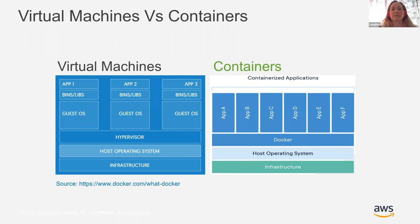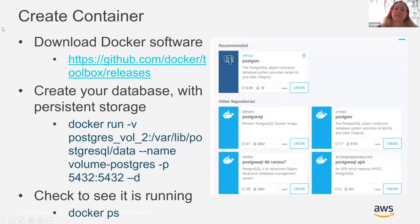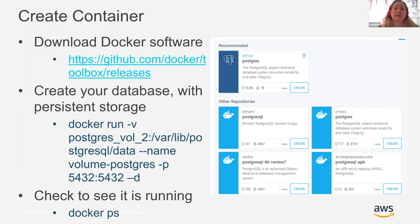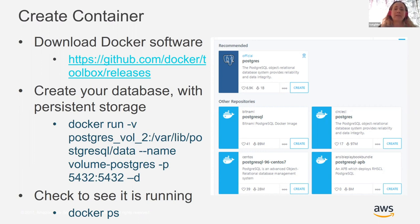When you get to containers, you have your infrastructure and host OS like before, but then you have Docker and no individual OS per container. There's less in the way — it's easier and faster to start. You can have a lot of individual applications as microservices that help your business perform at a faster rate.